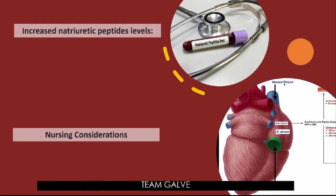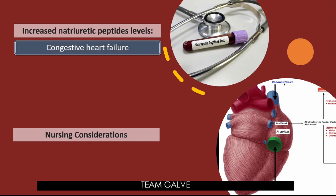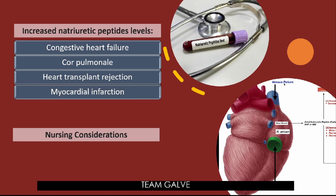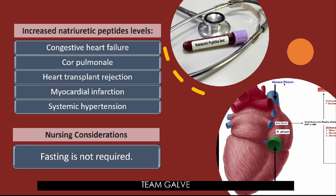Increased natriuretic peptide levels may indicate: congestive heart failure, cor pulmonale, heart transplant rejection — if the patient recently underwent a heart transplant and natriuretic peptides are elevated, the patient is probably rejecting the organ — myocardial infarction (MI), and systemic hypertension. Nursing consideration: fasting is not required for this test.